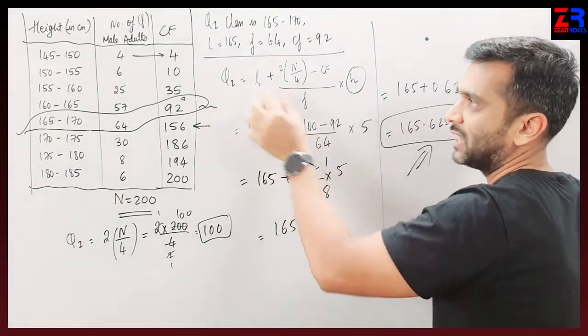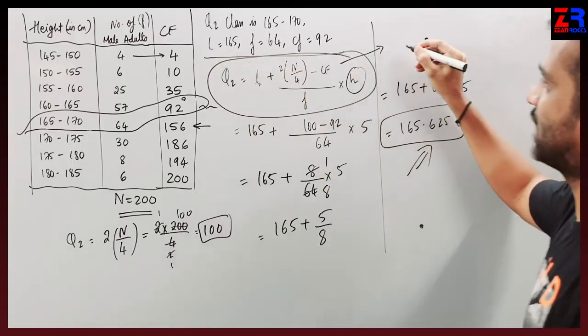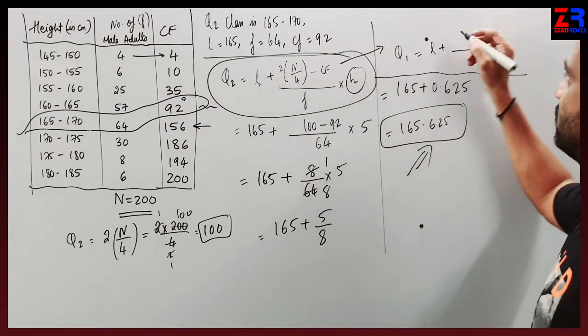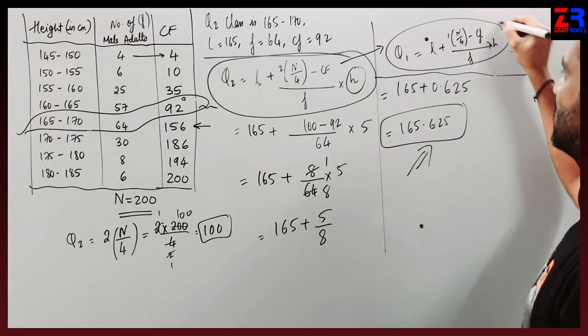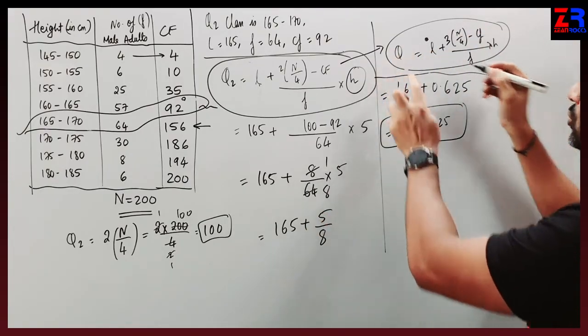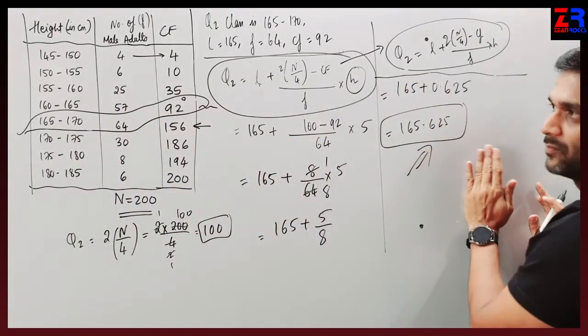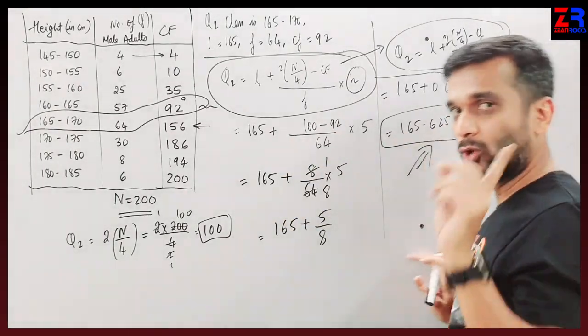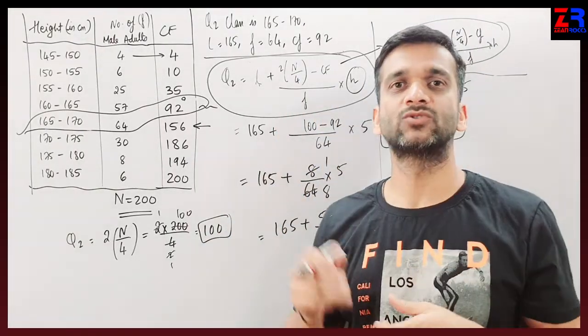For quartile 1, the formula is L plus 1N upon 4 minus CF upon F into H. For quartile 3, it's 3N upon 4. The steps remain the same - only the numerator changes: 1N for Q1, 2N for Q2, 3N for Q3. In the next lecture there will be more similar sums, but you have to solve them on your own first. Okay, bye bye.